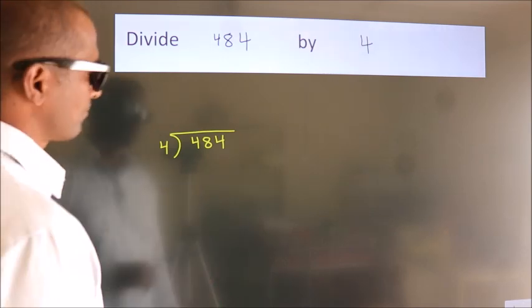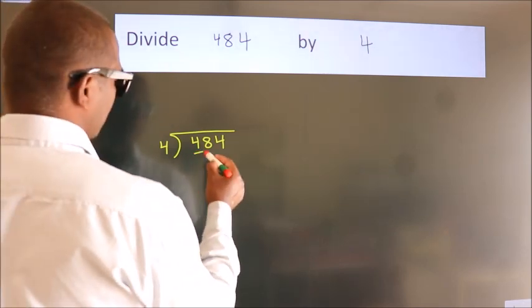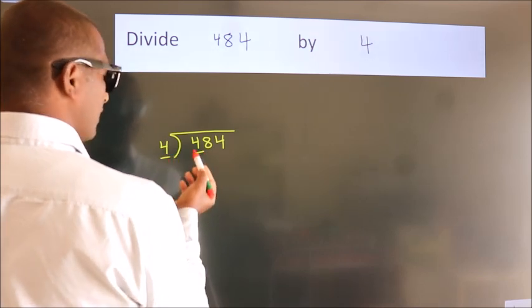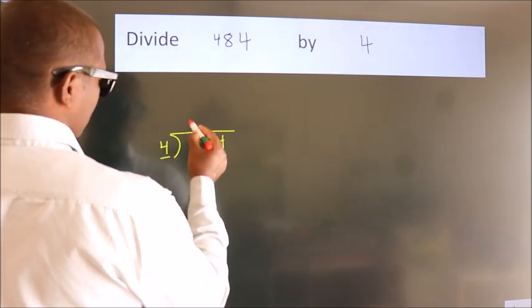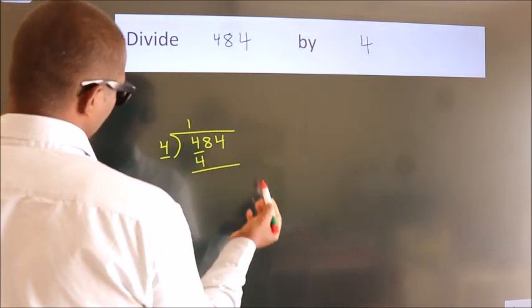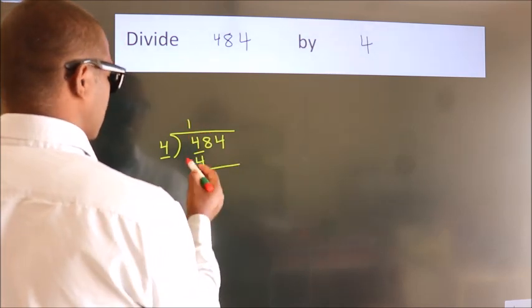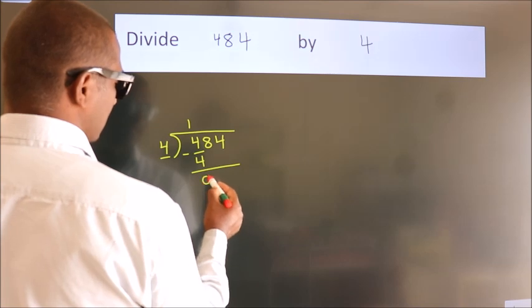Next, here we have 4, here 4. When do we get 4? In 4 table. 4 once, 4. Now we should subtract. We get 0.